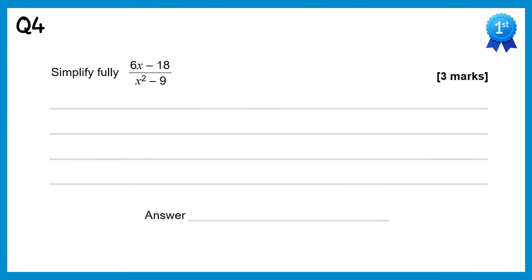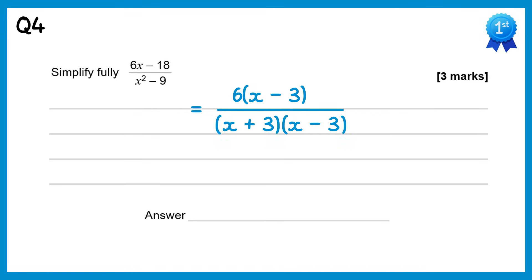To simplify this fraction we need to factorise the top and bottom. The top factorises to give 6 lots of x minus 3, and the bottom is the difference of two squares, so x plus 3 times x minus 3. We can now cancel the common factors of x minus 3, so we get 6 over x plus 3.